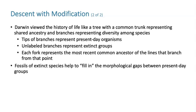Darwin thought about the history of life as like a tree, where the common trunk represents shared ancestry. The branches represent the diversity among species. The tips of the branches represent present-day organisms, and if a branch didn't keep going or branching, that would be an extinct group. Each fork in the tree represents the most recent common ancestor of that branch.